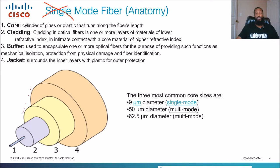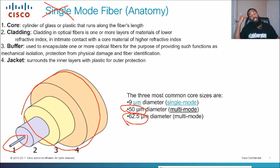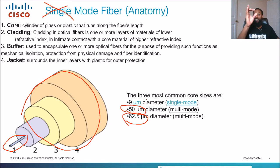The core on multi-mode is a little bit bigger. There are two types of multi-mode core sizes: 50 microns and 62.5 microns in diameter. When you compare that to the average human hair, which is about 80 to 85 microns, that gives you an idea of how small the core is for multi-mode fiber — even though it's bigger than single mode's nine microns.